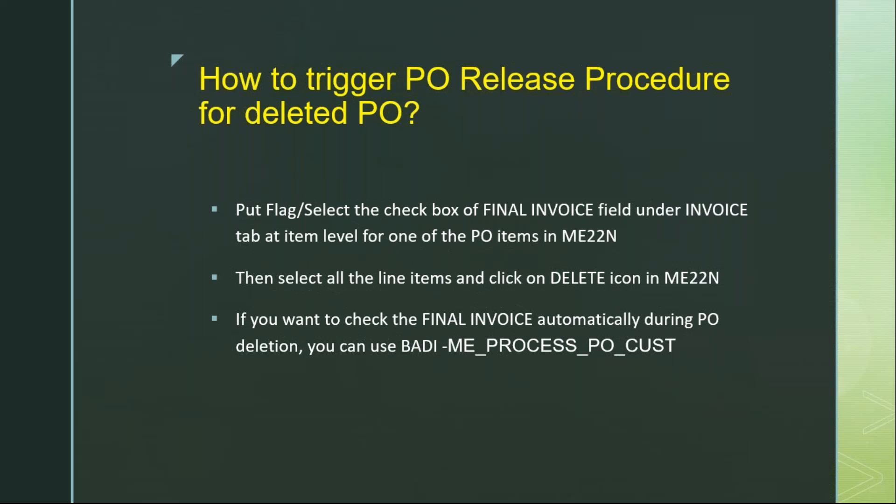We are going to see how it works. I am going to show you in a separate screen. If you want to achieve the same thing — like users may not remember to flag the Final Invoice and they just delete all the line items — but you still want to trigger the PO release procedure, then you can activate this BAdI. You can tell ABAP that when the PO line items are getting deleted, the Final Invoice flag needs to be activated automatically. By using the BAdI ME_PROCESS_PO_CUST, you can utilize the functionality of SAP BAdI to activate Final Invoice when the PO line items are deleted, so that the PO release procedure will still be triggered and the approver will know that this PO is deleted.